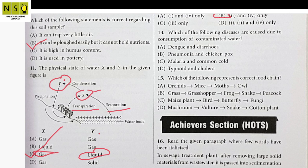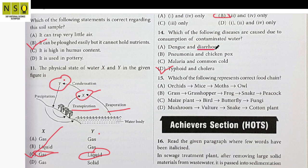Question 14: Which of the following diseases are caused due to the consumption of contaminated water? Options include: dengue and diarrhea; pneumonia and chickenpox; malaria and common cold; typhoid and cholera. Typhoid and cholera are caused by drinking contaminated water. Diarrhea could also be caused by contaminated water, but that option also includes dengue, which is caused by mosquitoes. Therefore the correct option is Option D — typhoid and cholera.